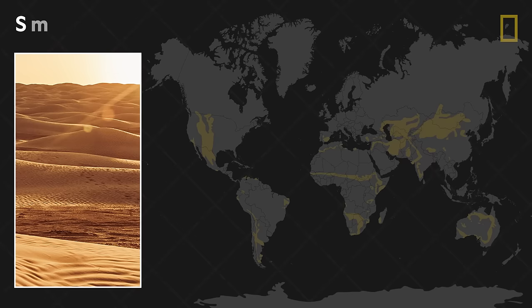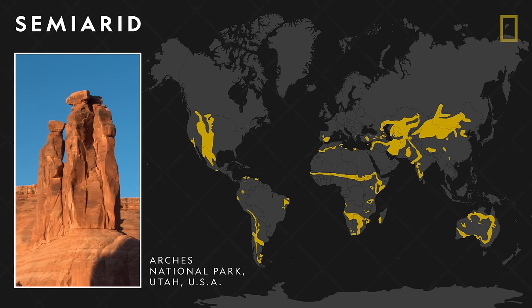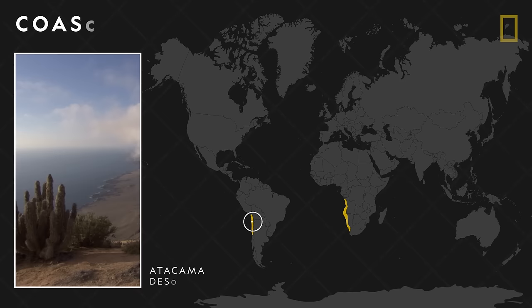Semi-arid deserts are located in Asia, Europe, and North America. These cold winter deserts often form when tall mountain ranges block moisture through a process called the rain shadow effect. Coastal deserts form alongside the tropical western edges of certain continents. Despite their proximity to water, coastal deserts remain dry.